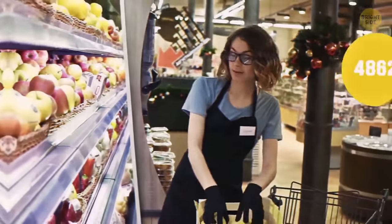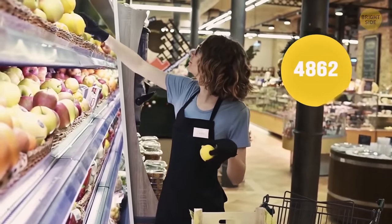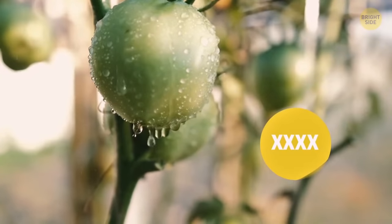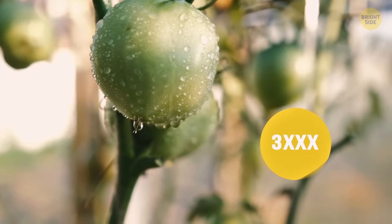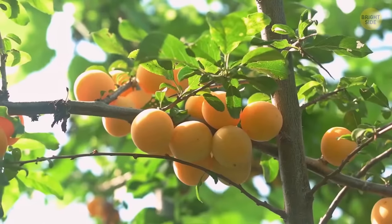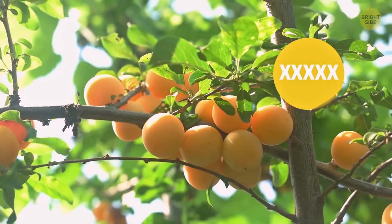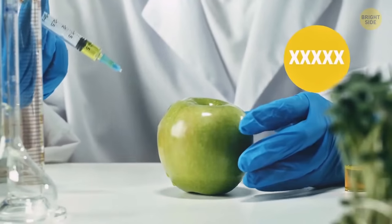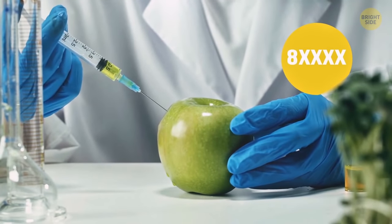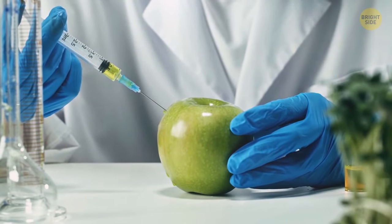The numbers on the fruit stickers tell you how exactly they were grown. If there are four digits and the first is four or three, the fruit has been sprayed with pesticides. If there are five digits and the first is nine, the fruit has been grown organically. If there are five digits and the first is eight, the fruit has been genetically modified.